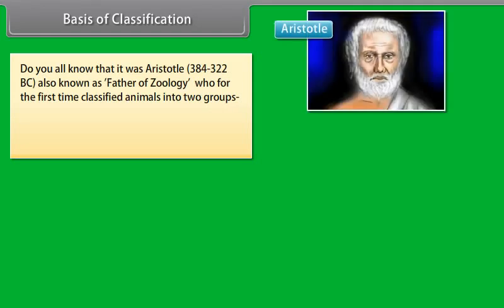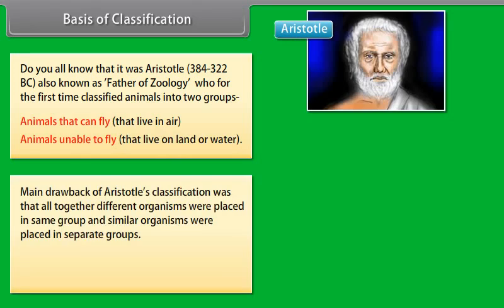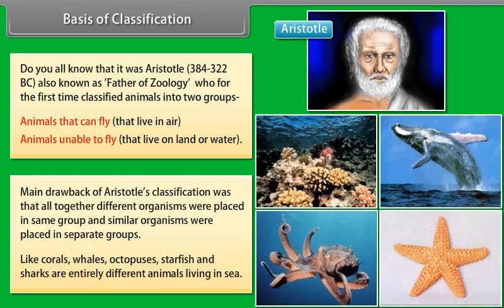Aristotle, 384 to 322 BC, also known as the father of zoology, was the first to classify animals into two groups: animals that can fly and live in air, and animals unable to fly that live on land or water. The main drawback of Aristotle's classification was that altogether different organisms were placed in the same group. For example, corals, whales, octopuses, starfish and sharks are entirely different animals living in the sea.